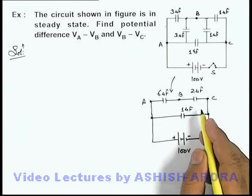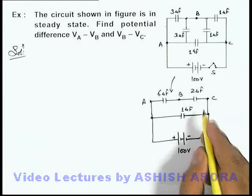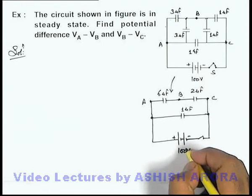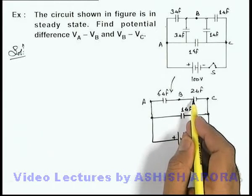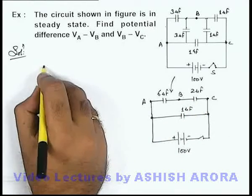Now in this situation, if we just have a look carefully, across this 100 volt battery the 6 and 2 microfarad capacitors are considered to be in series. So we find out the capacitance.